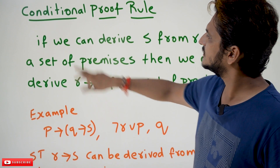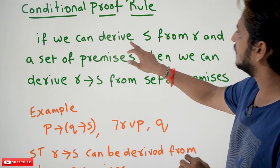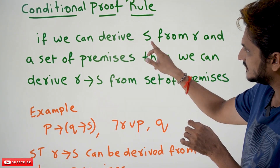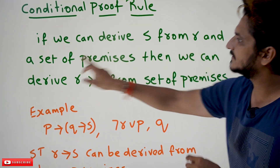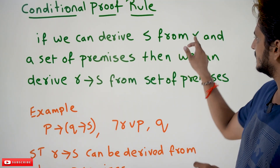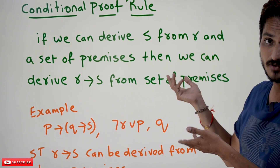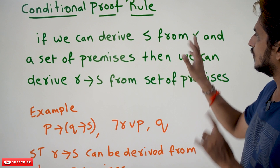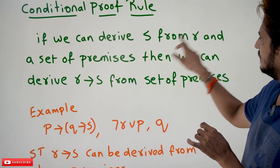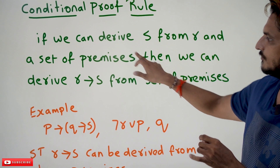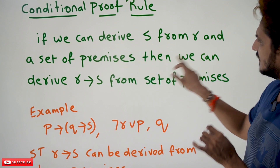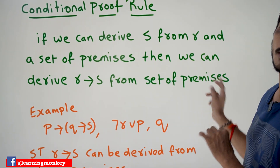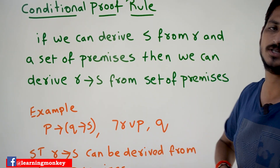So what is the definition? If we can derive S from R and a set of premises — R is a proposition, it may be a single variable or a multi-variable proposition — then we can derive R implies S from the set of premises. That is what the conditional proof definition says.